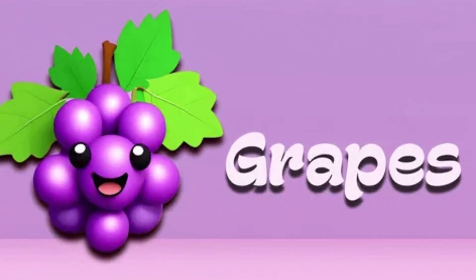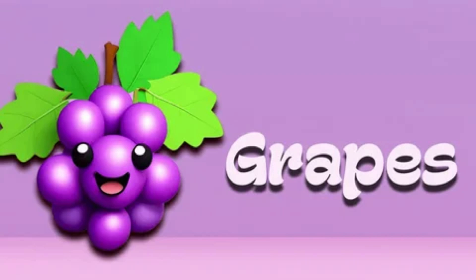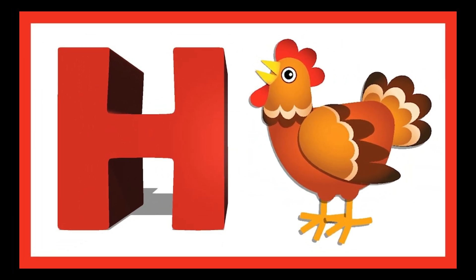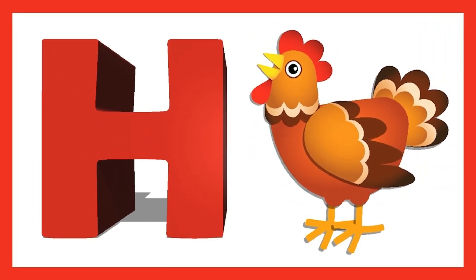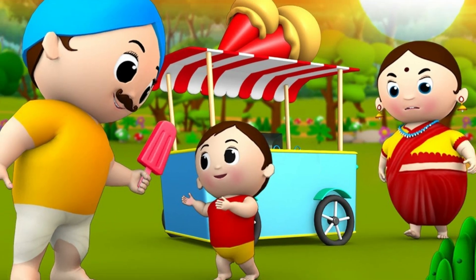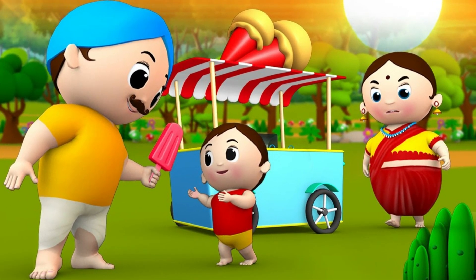G is for grapes, grapes means angur. H is for hen, hen means murgi.